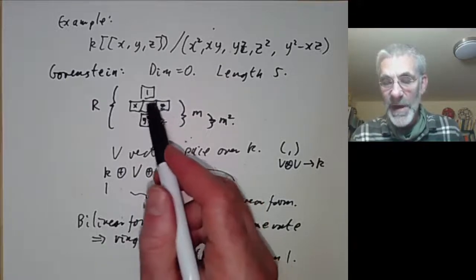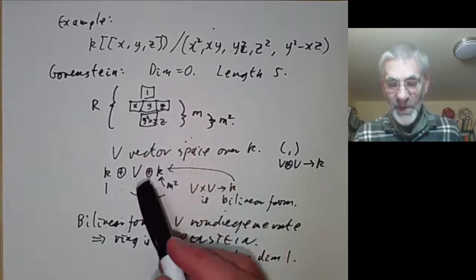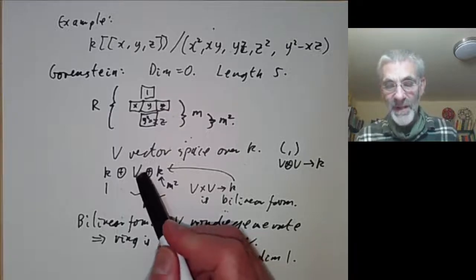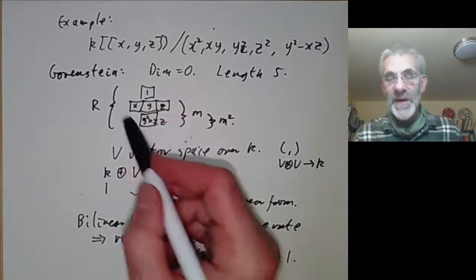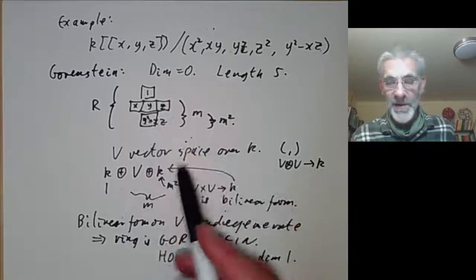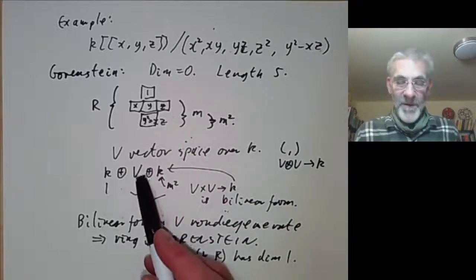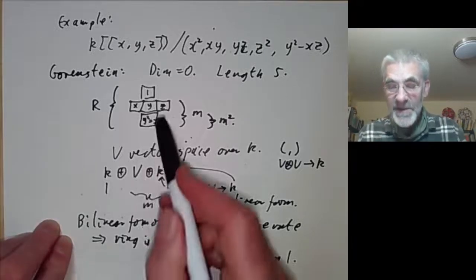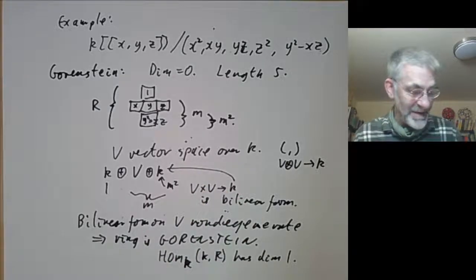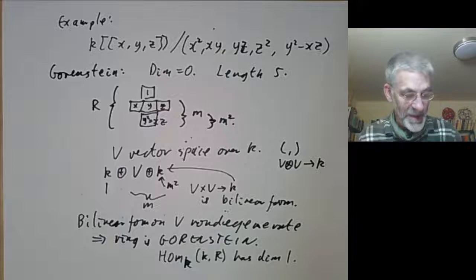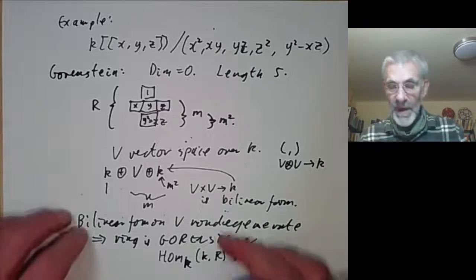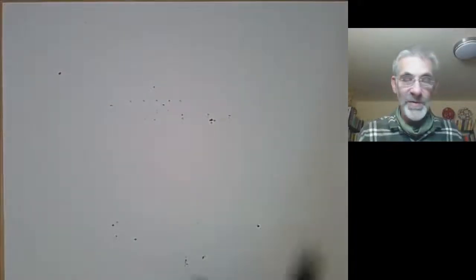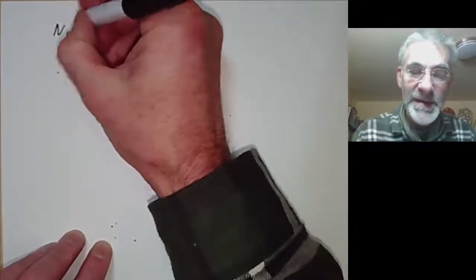Here we're taking V to be three-dimensional. The reason we're taking it to be three-dimensional is that if V is two-dimensional, then this turns out to be a complete intersection ring. So for a ring that's not a complete intersection, we just have to take V of dimension at least three, and the simplest case is V being three-dimensional. Now we have to see that it's not a local complete intersection ring.